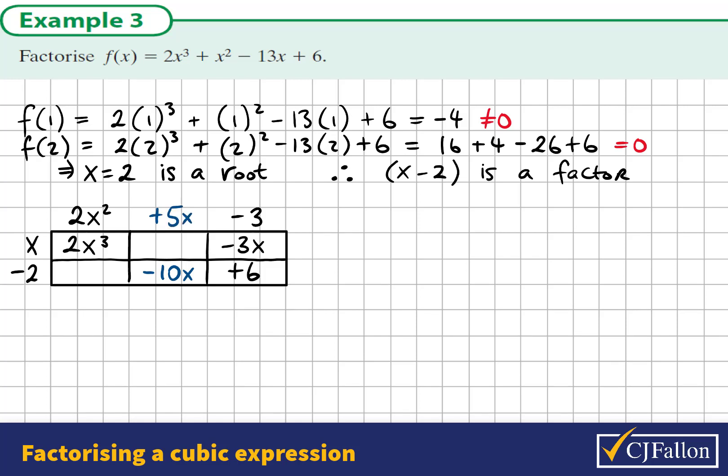So I have my quadratic factor. I might multiply out the last two parts just to see if it works. So x by 5x is 5x squared, negative 2 by 2x squared is negative 4x squared, and this adds up to 1x squared, which is what I wanted to add up with, so we know we're correct. So what I can now say is our function can be expressed as x minus 2 times this quadratic factor, 2x squared plus 5x minus 3.